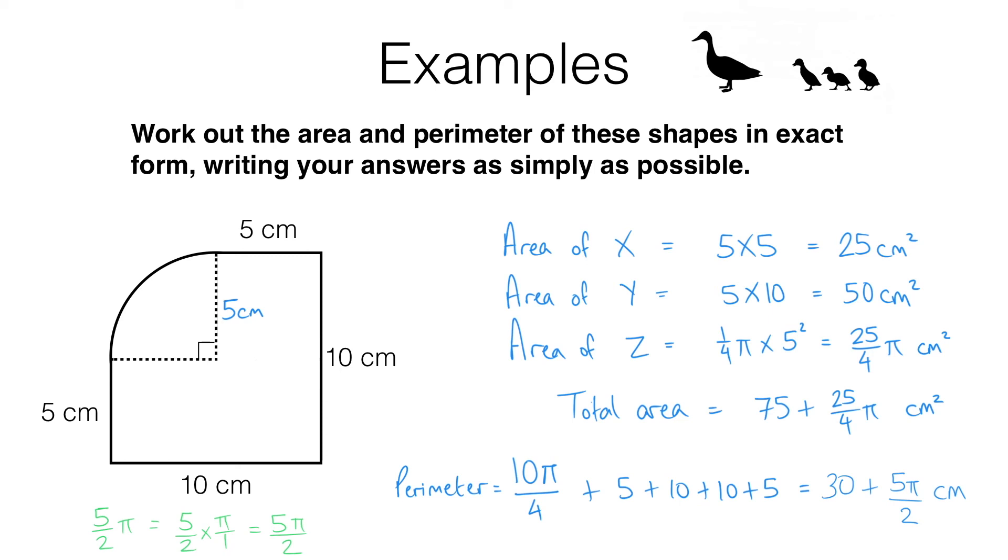The reason the pi ended up inside the fraction in this case was that we first worked out 10 pi, which was the circumference of a full circle, and then we divided all of that by 4. So we ended up writing all of that over 4. But as I say, you should be equally comfortable working with expressions in this form and in this form.